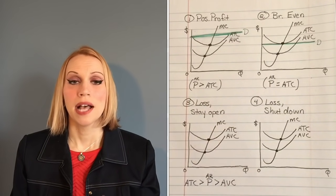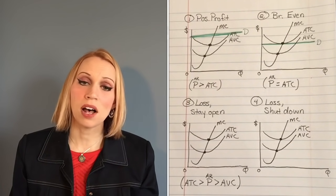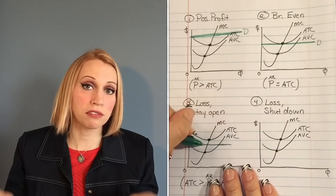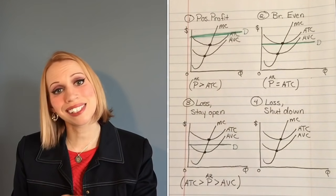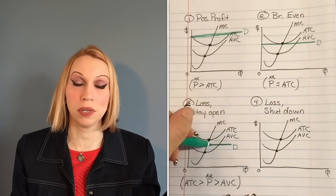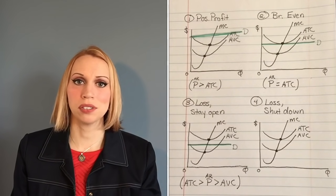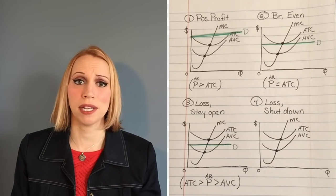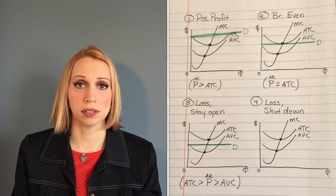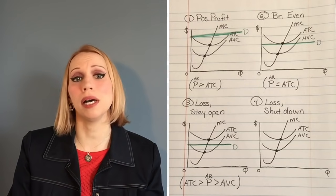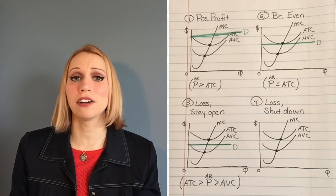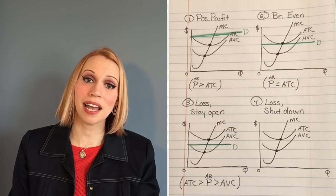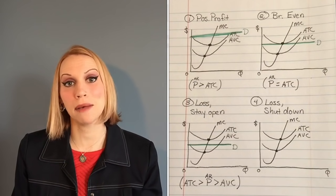If you're going to stay open during a loss, that means you can pay your workers. You can't cover all of your total cost, but you are bringing in enough money to cover your variable cost. So the demand curve would be slicing through that space between your ATC and AVC curves. If our demand curve is right there in that space, not only can I cover my variable cost but I can also put some money towards my fixed cost. I might not cover my entire fixed cost that season, but at least I'm minimizing my debt.